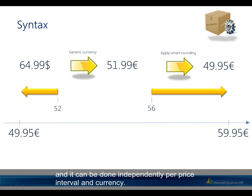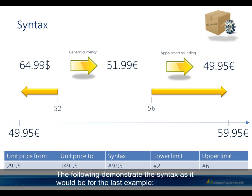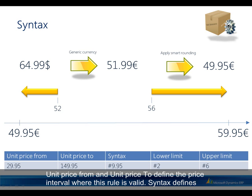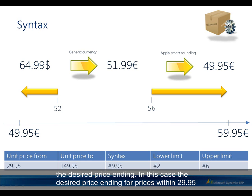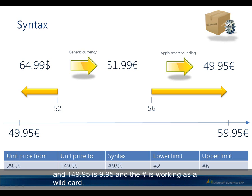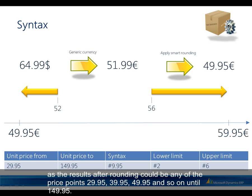Smart rounding rules can be configured independently per price interval and currency. The syntax uses 'Unit Price From' and 'Unit Price To' to define the price interval where the rule is valid, while 'Syntax' defines the desired price ending. For prices within 29.95 and 149.95, the desired ending is 9.95. The number sign acts as a wildcard, so results after rounding could be any of the price points: 29.95, 39.95, 49.95, and so on up to 149.95.